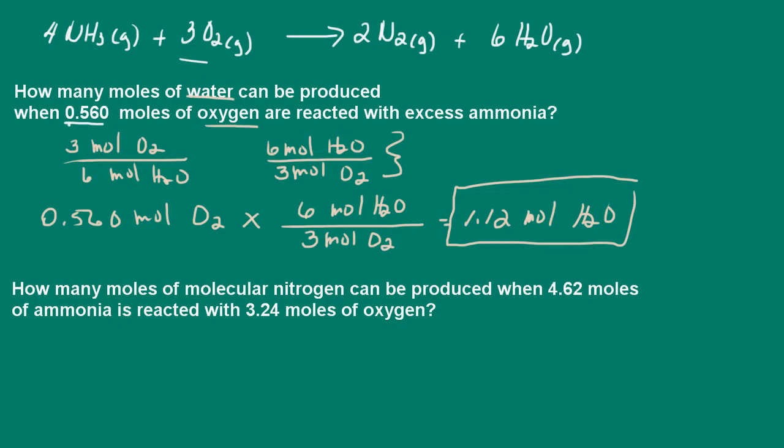Now let's take a look at this second problem. This one's a little different. Again, be careful. Make sure you read the problem carefully. So here I'm asked how many moles of molecular nitrogen can be produced when 4.62 moles of ammonia is reacted with 3.24 moles of oxygen. So we're using the same balanced chemical equation here. So now we have 4.62 moles of ammonia and 3.24 moles of oxygen. How much nitrogen is produced?